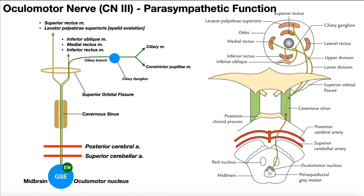Now remember, the oculomotor nerve, like the trochlear nerve — cranial nerve 4 — originates in the midbrain, which is the superior part of the brain stem. Over here we have a corresponding picture. We know that this is the midbrain because we've got the red nucleus and the periaqueductal gray matter.